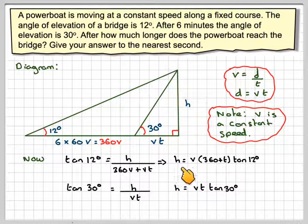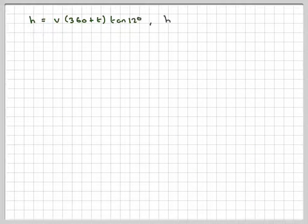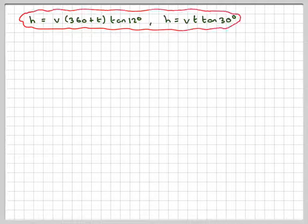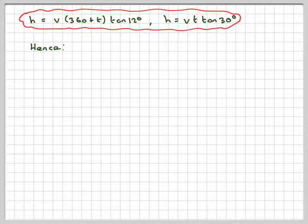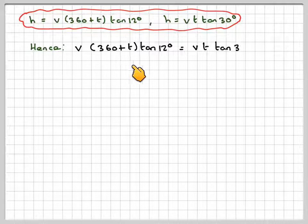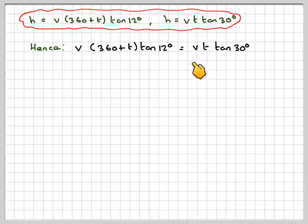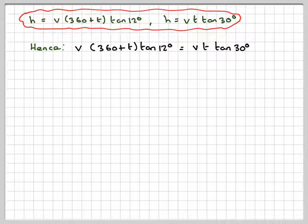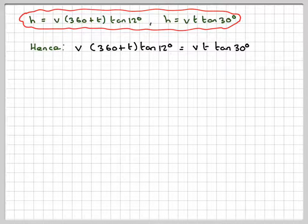h is the same value in both cases, so hence v(360 plus t)tan 12° is equal to vt tan 30°. v can be cancelled out.